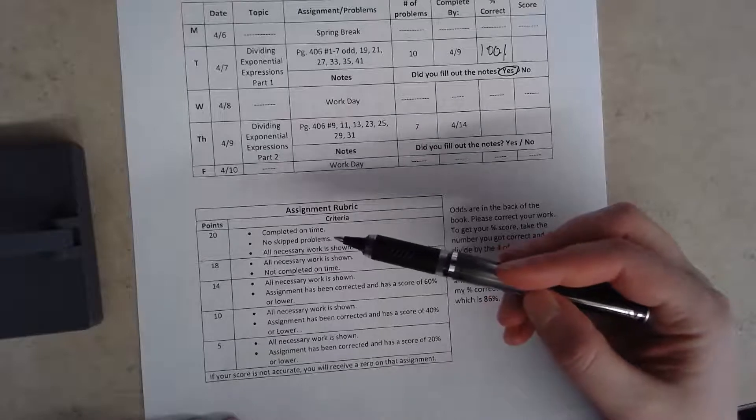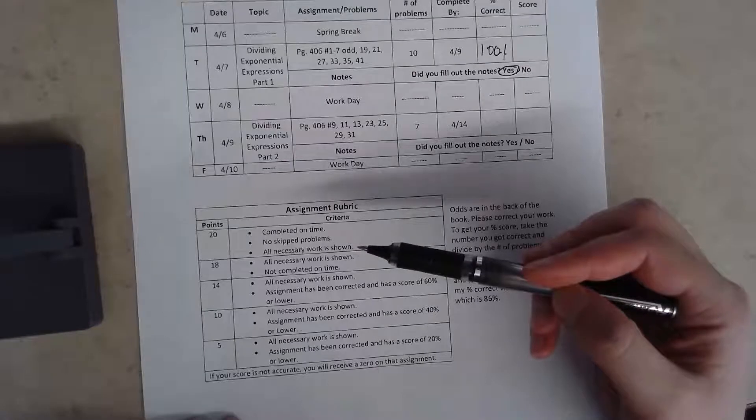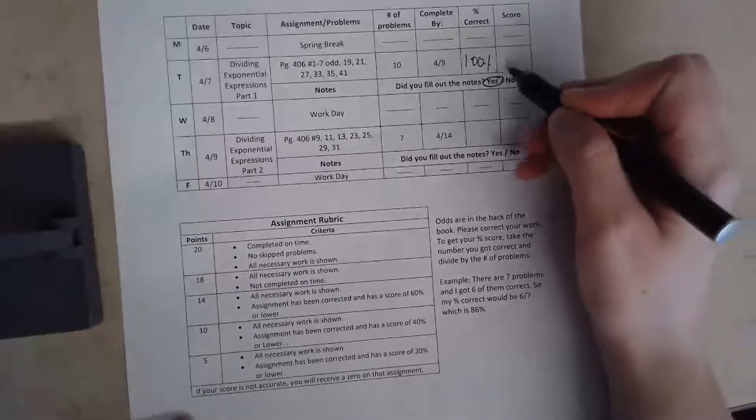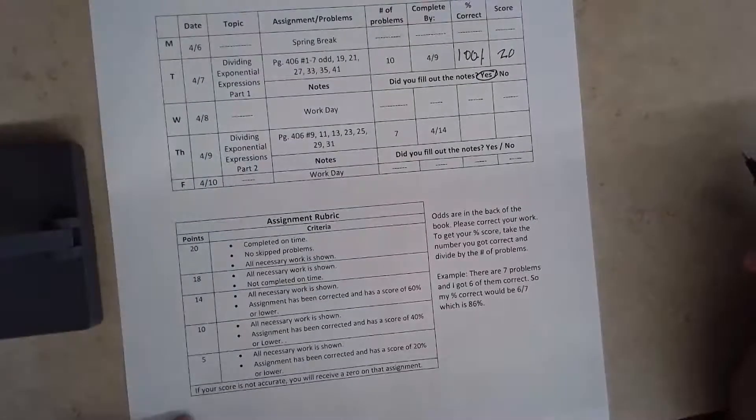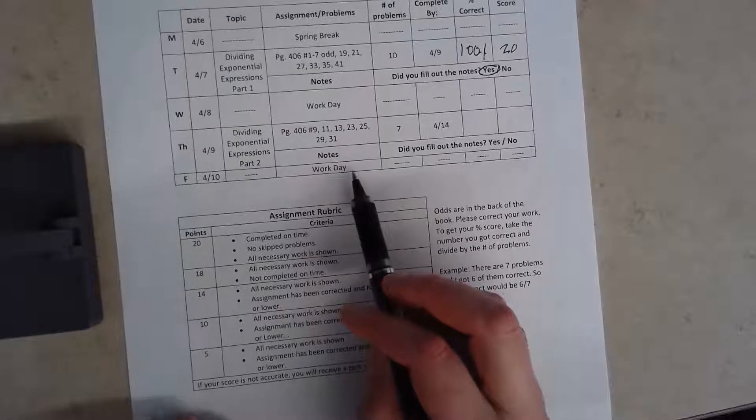So looking at my rubric, I completed this on time, so I completed it by the ninth. I didn't skip any problems and I showed all the work that was necessary. Sometimes there's a lot of work that needs to be shown, sometimes there's just a very little bit. So then my score right here is twenty. If you notice, I give you work days in between each assignment so that you do have time to work on these.